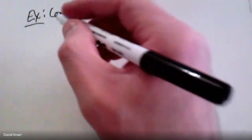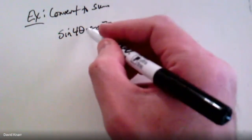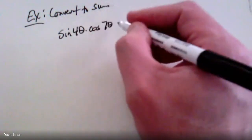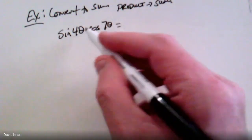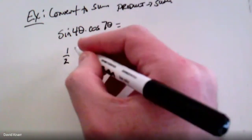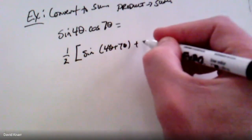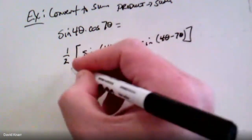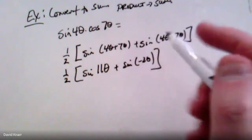Now let's convert a product to a sum. I want you to convert 4·sin(θ)·cos(7θ). It's a product of two trig functions and I want it as a sum. Looking at the product-to-sum formulas on your formula sheet, the relevant formula for sine times cosine gives: one-half of [sin(4θ + 7θ) + sin(4θ − 7θ)], which simplifies to one-half of [sin(11θ) + sin(−3θ)].